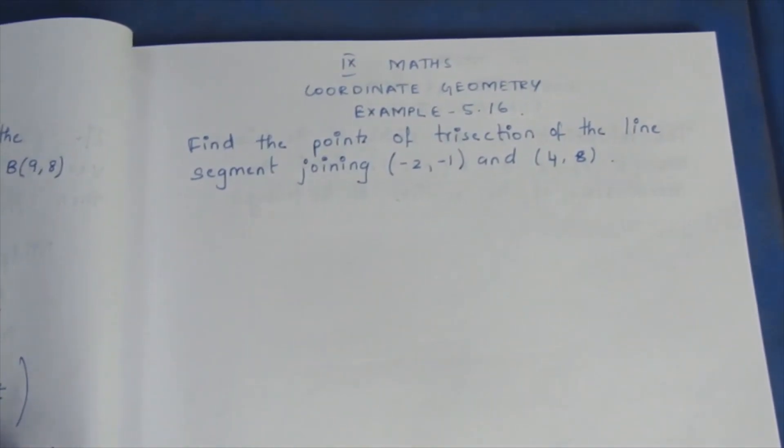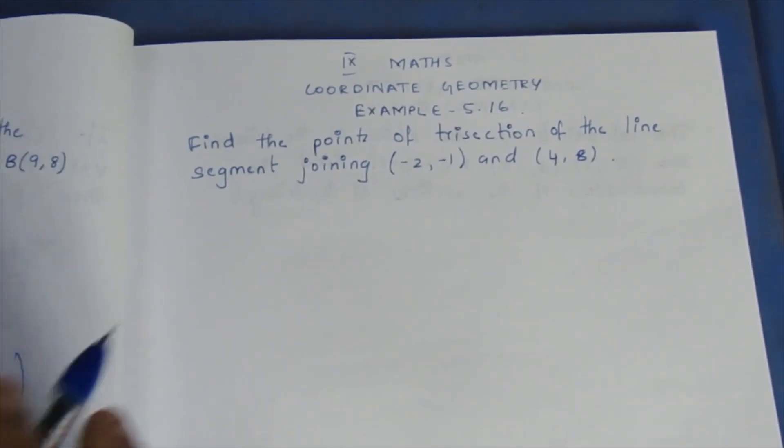Question: find the points of trisection of the line segment joining (-2, -1) and (4, 8).